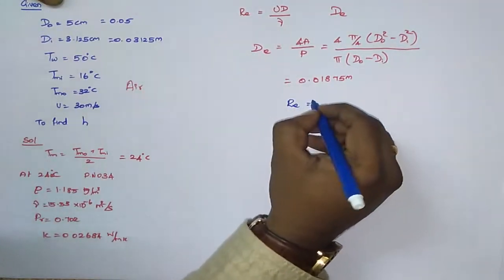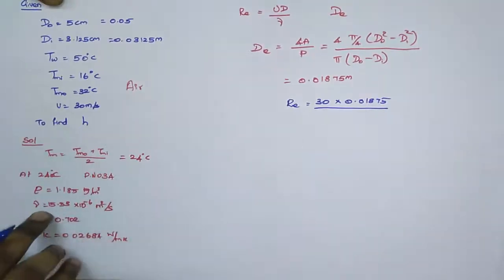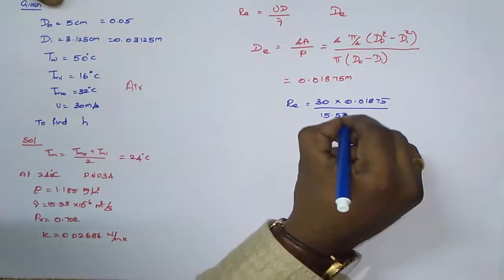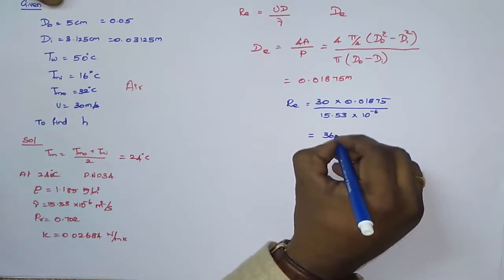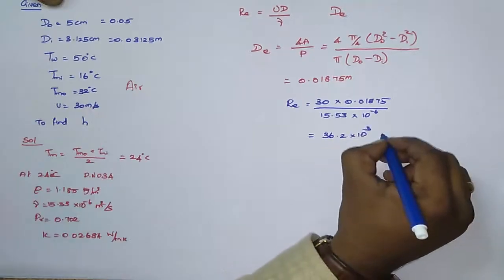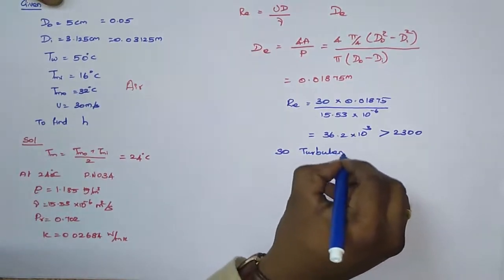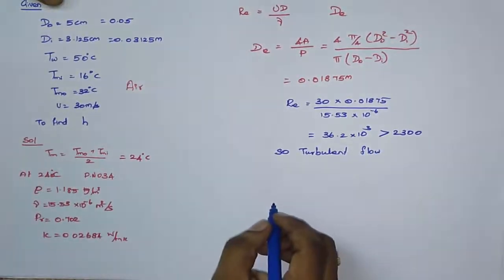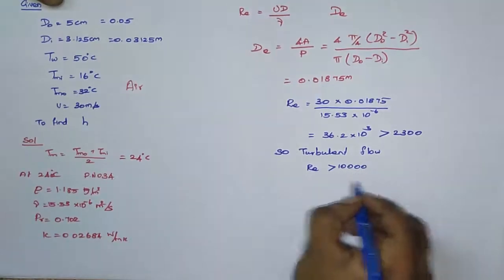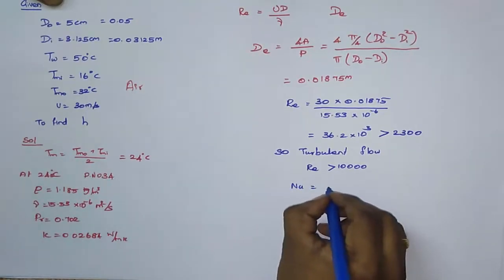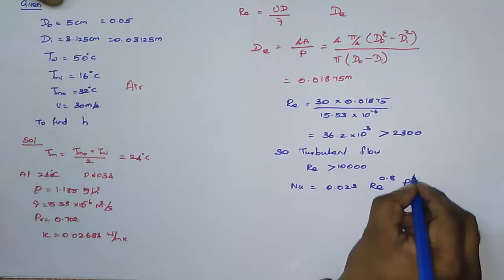Substituting into the Reynolds number equation: Re = (30 × 0.01875) / (15.53 × 10⁻⁶) = 36.2 × 10³, which is greater than 2300, so the flow is turbulent.